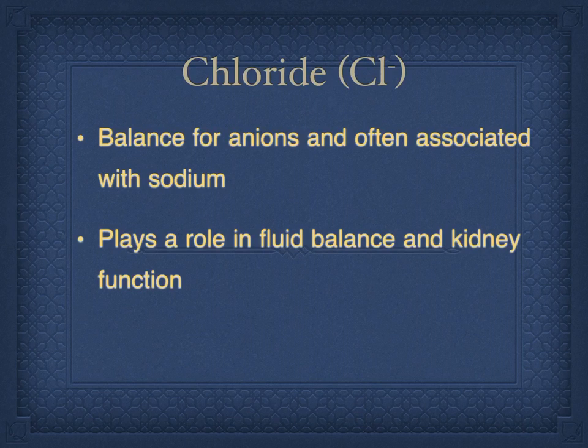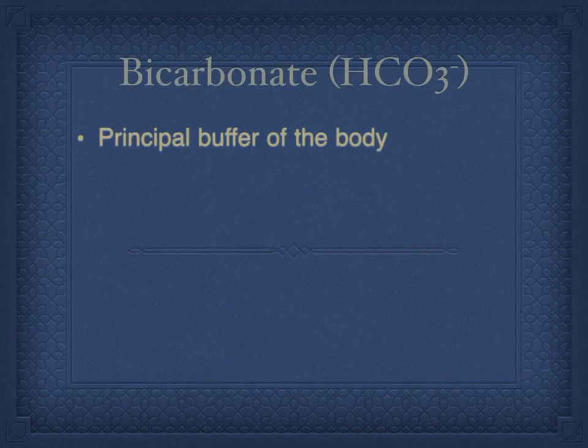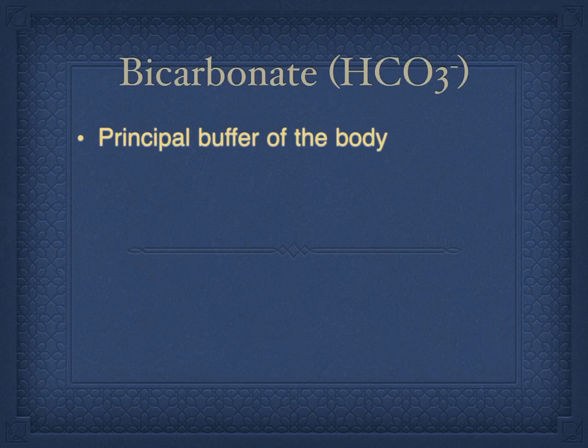Chloride is the first of the negative electrolytes, or anions. We are used to seeing it in the form of sodium chloride, or table salt, so it's oftentimes associated with sodium. It helps to balance all of the positive cations and is used a little bit for fluid balance and kidney function. Bicarbonate is the principal buffer in the body, and you can look at the acid-base lecture for more information about how bicarbonate is used to regulate pH.